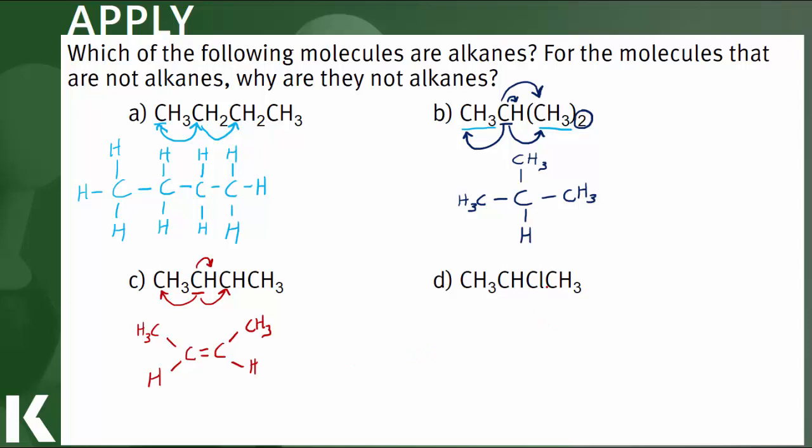Finally, in letter D, you'll spot this Cl right there in the middle. That indicates that not all the atoms here are carbon and hydrogen. We've got a chlorine kind of stowed away in the center there. And that rules out letter D from being an alkane.